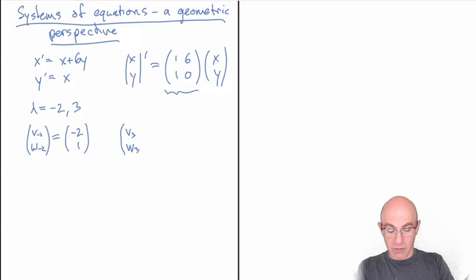Those are eigenvalues and eigenvectors. And what these allow us to do right away is we write down the general solution using them.